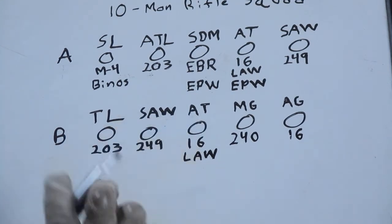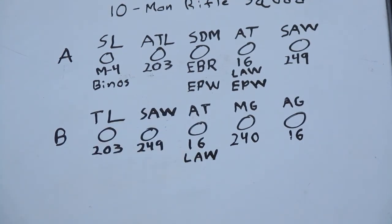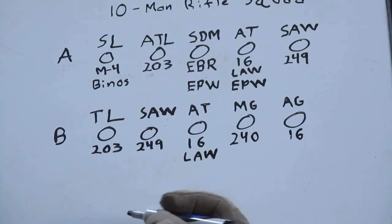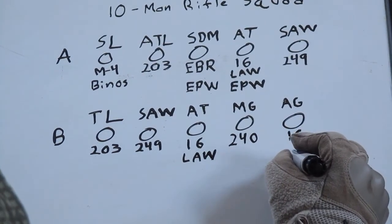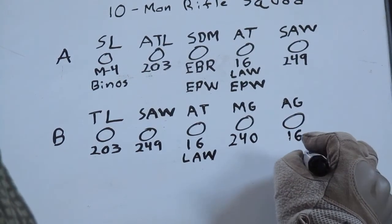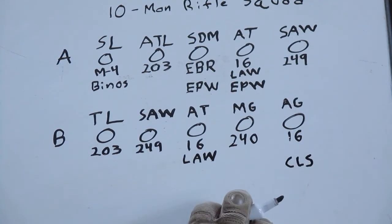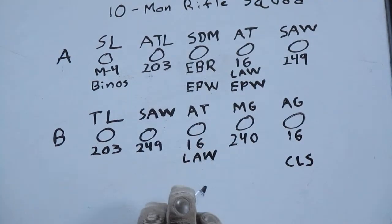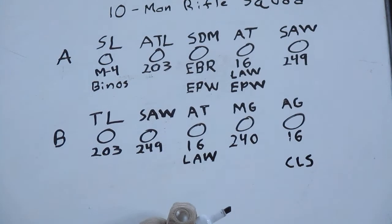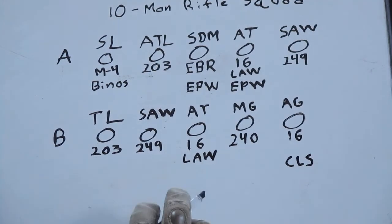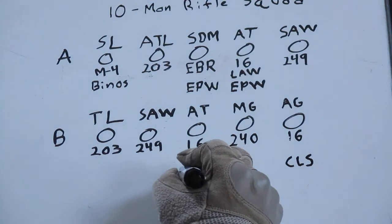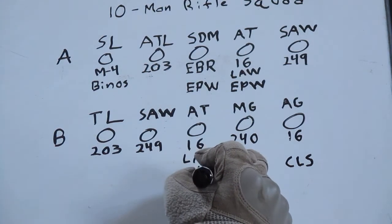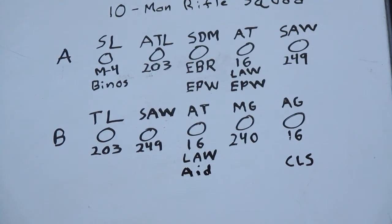On your Bravo team, you're going to have to have your aid and litter team. The CLS, or Combat Lifesaver, should be your assistant gunner. And the person that would help him carry litters and perform first aid will be the anti-tank gunner from Bravo team.